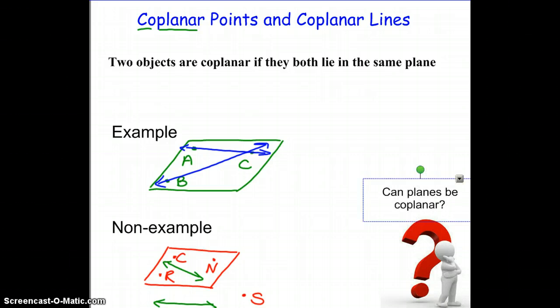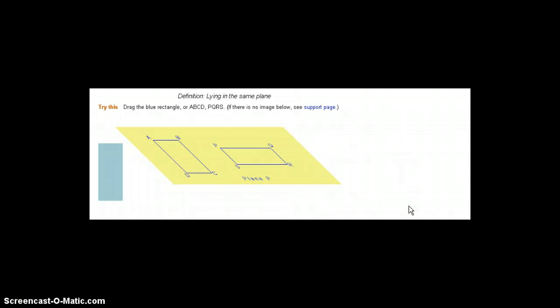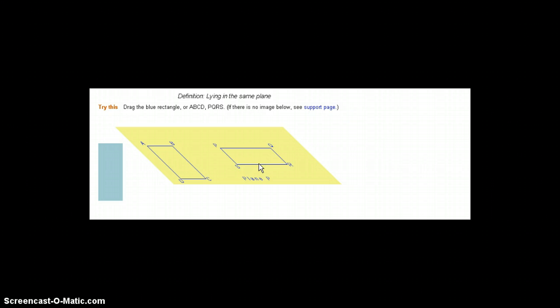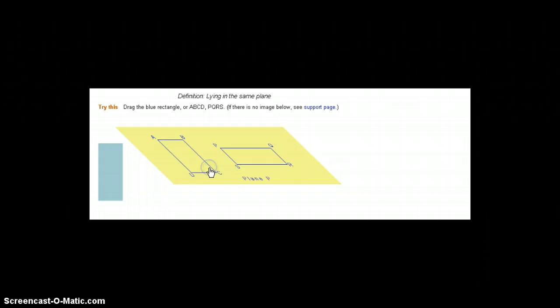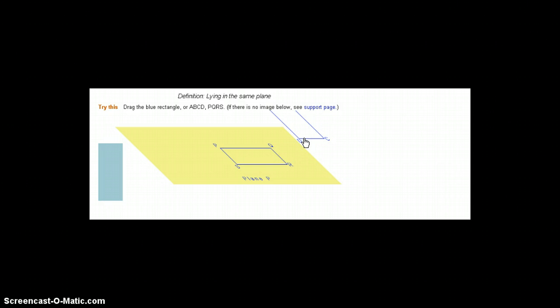So, the question arises, can planes be coplanar? And the answer to that question is that they can be coplanar. So if we look here, the yellow represents plane P. And within plane P, there is plane A, B, C, D, and there is plane P, Q, R, S. Please notice I'm starting at a vertex, and I am going around. So right now, I have two planes that are coplanar, and if I were to move this over, I no longer have coplanar planes.